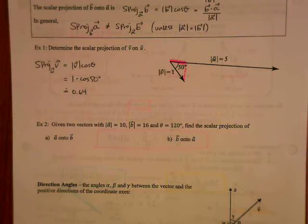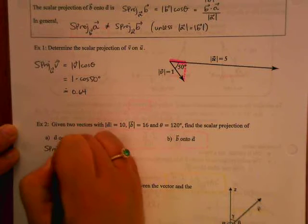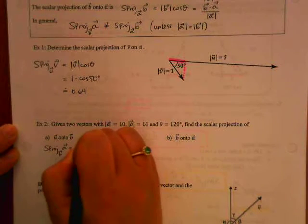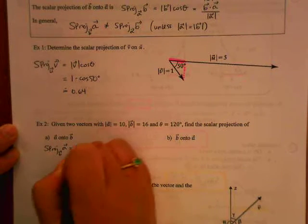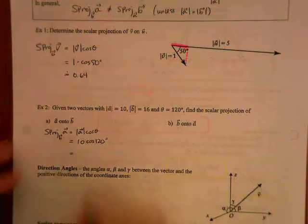And then for example 2, you don't even need the diagram to have all the information given. So for scalar projection of A onto B, that's magnitude of A cos theta, so that's 10 cos 120 degrees, which is negative 5, obtuse angle.